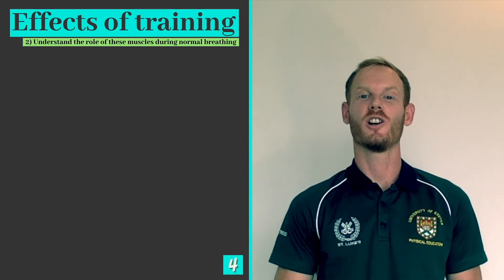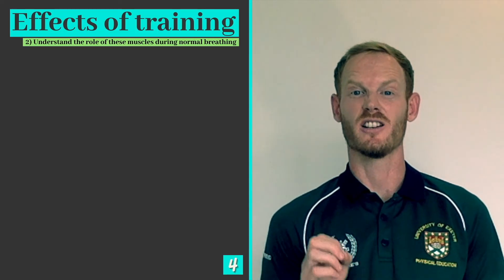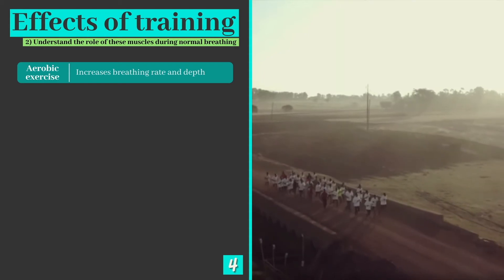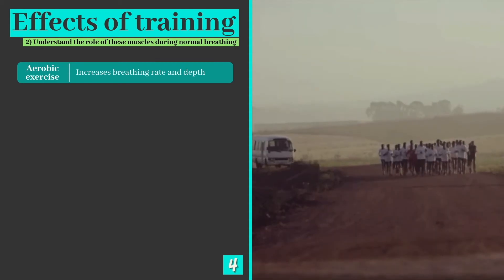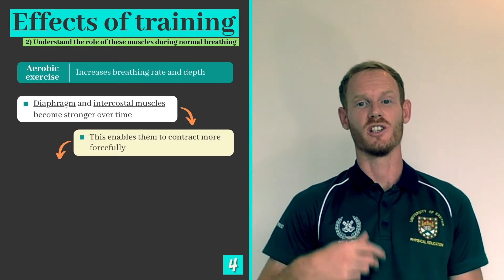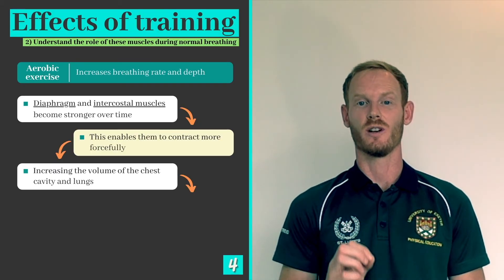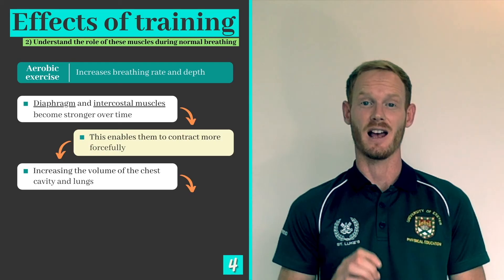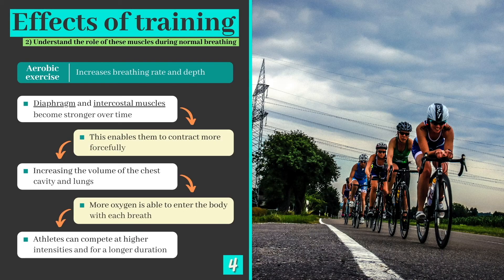Before we wrap up the lesson, let's take a quick look at the long-term effects of training on the respiratory muscles, as you'll need to know this further down the line. Sustained exercise forces you to breathe faster and take deeper breaths. Over time, this increases the strength of the diaphragm and the intercostal muscles, which in turn enables them to contract more forcefully, further increasing the volume of the chest cavity and the lungs. As a result, more oxygen is able to enter the body with each breath, enabling aerobic athletes to compete at higher intensities and for longer periods of time.